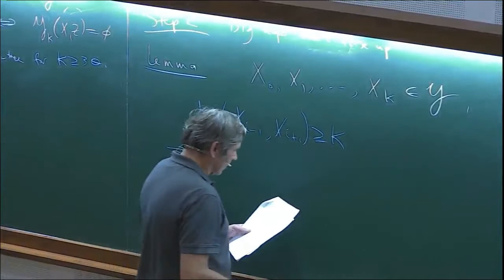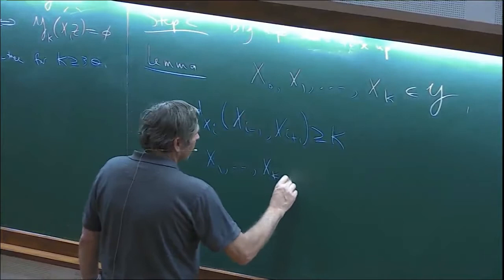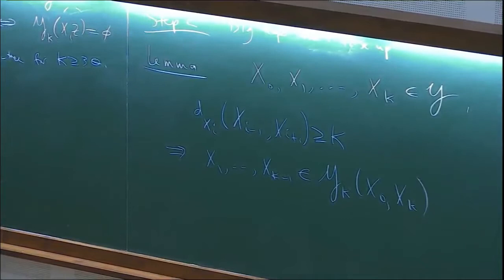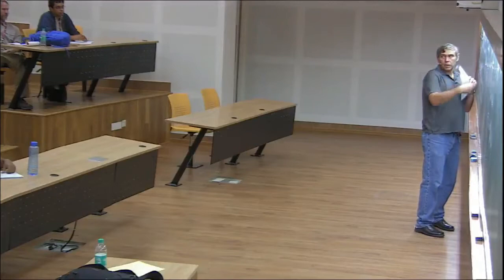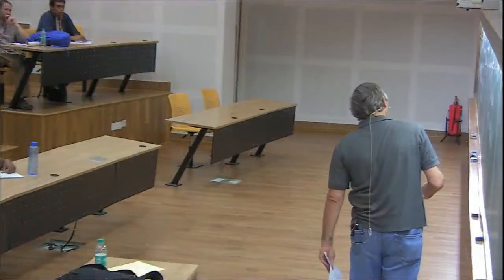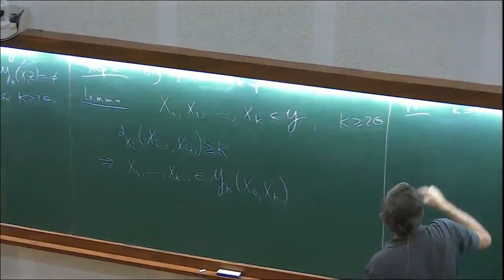Then X1 through X_{K-1} all belong to this set Y_K of X0, XK. In other words, we're exactly in that situation where the projections are all — the input into the lemma is just the local picture. It's a local-implies-global result: we look at three in a row, see this picture with dots projecting where they're supposed to, and conclude this is true globally. The proof: when K equals two, there is nothing to prove. Let me think about K equals three. I have four things X0, X1, X2, X3. I'm told that X0 and X2 project far apart, and in X2 I see X1 and X3 far apart like this.